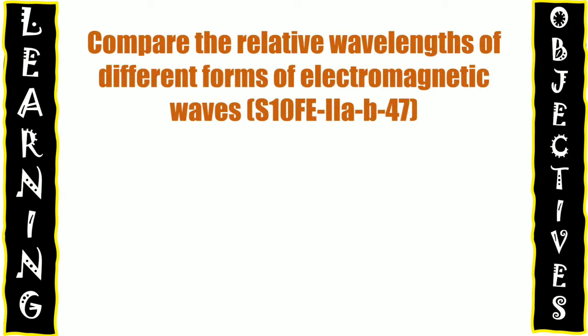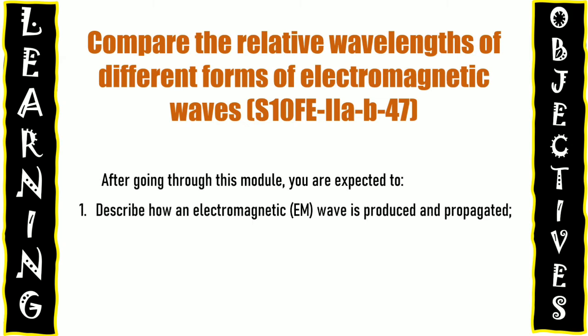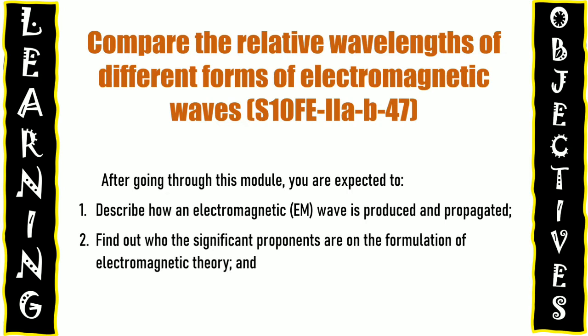Compare the relative wavelength of different forms of electromagnetic waves. After going through this module, you are expected to: first, describe how an electromagnetic wave is produced and propagated; second, find out who the significant proponents are on the formulation of electromagnetic theory; and third, compare the relative frequencies and wavelengths of each electromagnetic wave.